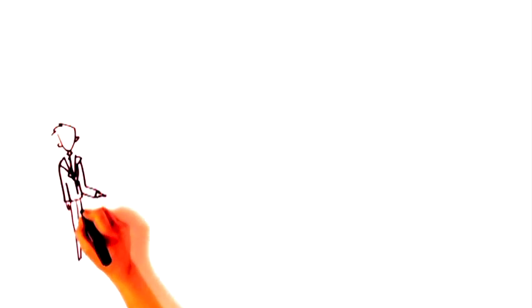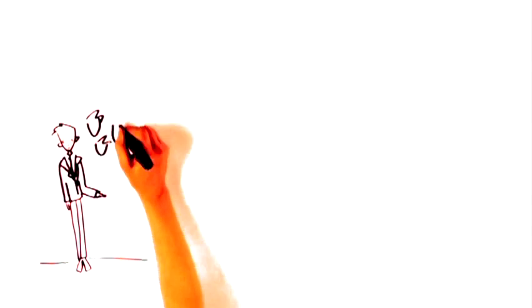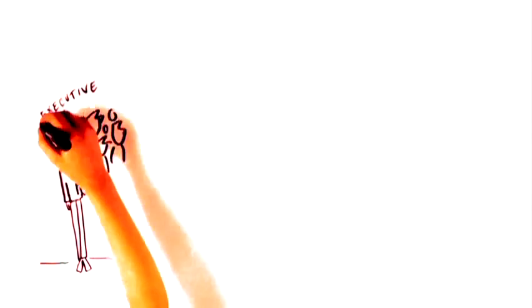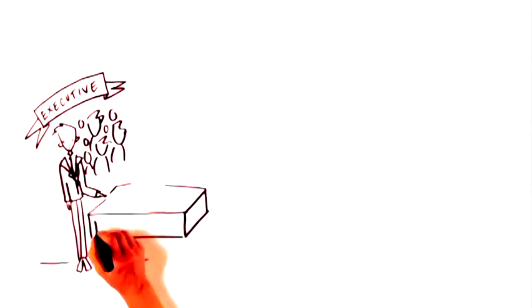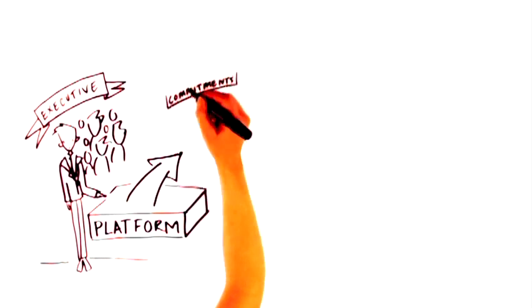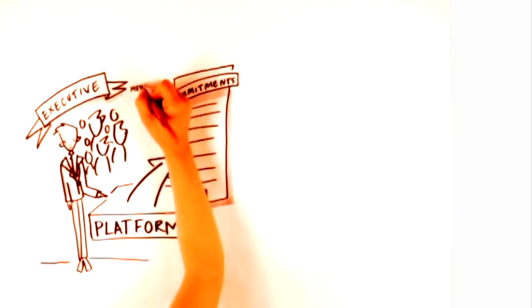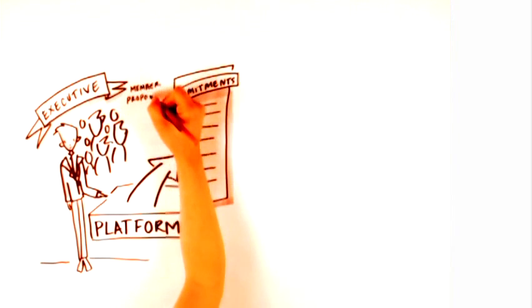When a general election is called for the country, the leader works with advisors and senior members of the party, called the executive, to develop a platform. A platform is a list of commitments they intend to act on if they get elected. This platform is developed with a few things in mind.